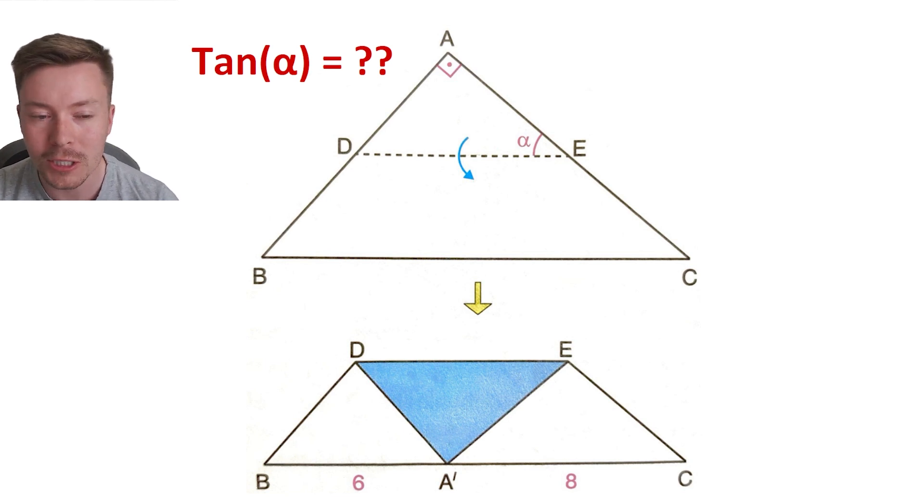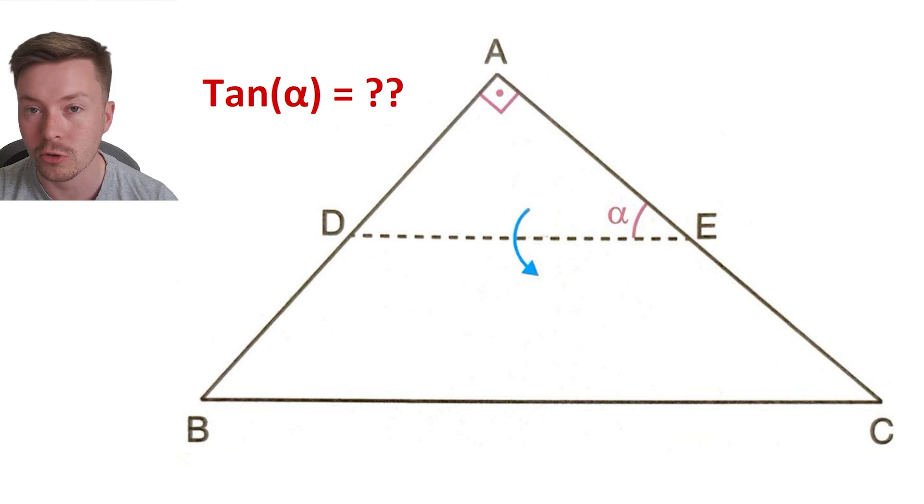So the first thing is to make this triangle a bit bigger, zoom it in, and then what I'm going to do is start marking on some angles so I've got 90 minus alpha.